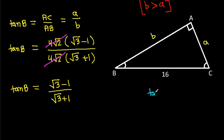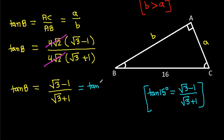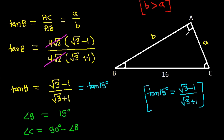We know that tan 15° equals (√3 − 1) over (√3 + 1). So tan B equals tan 15°, meaning angle B equals 15°. Also, angle C equals 90° minus angle B, because angle A is 90°. So angle C equals 90° minus 15°, which is 75°.